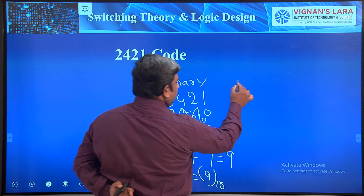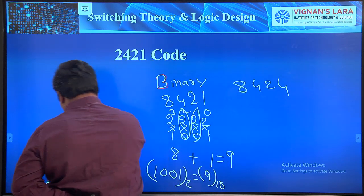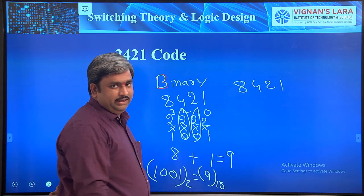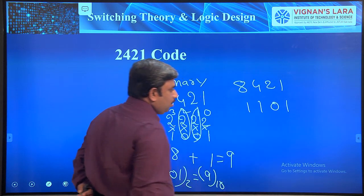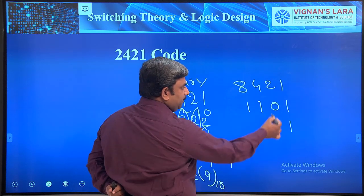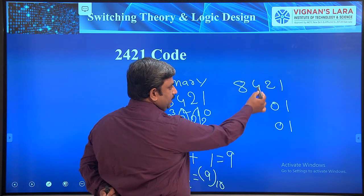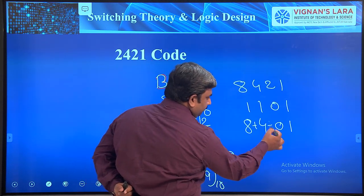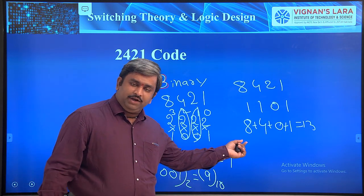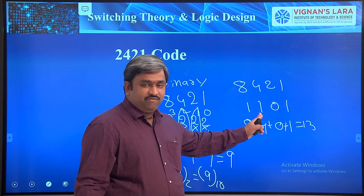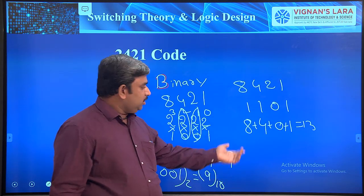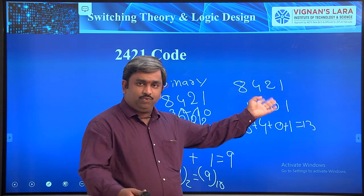Using the 8421 positional weights, for 1101: wherever there is a 1, write the corresponding weight; wherever there is a 0, write 0. So 8 is on, 4 is on, 0, and 1 is on — giving 8 + 4 + 0 + 1 = 13. That is the decimal value of binary 1101.